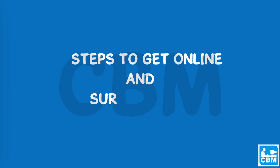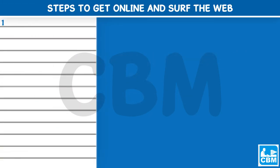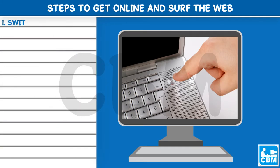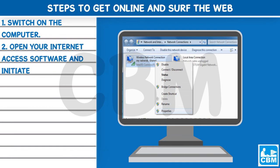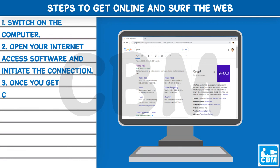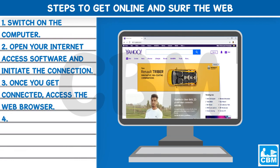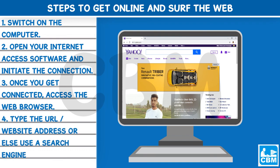Steps to get online and surf the web: 1. Switch on the computer. 2. Open your internet access software and initiate the connection. 3. Once you get connected, access the web browser. 4. Type the URL (website address) or use a search engine.